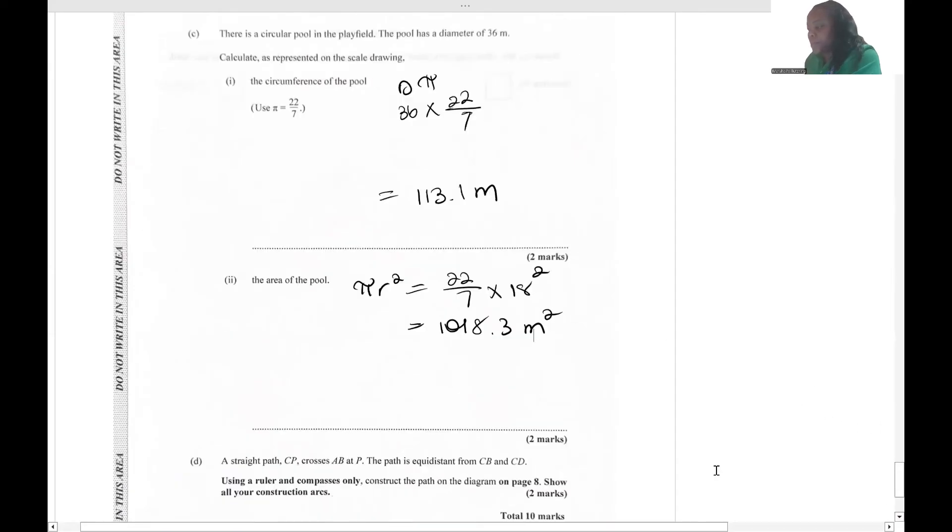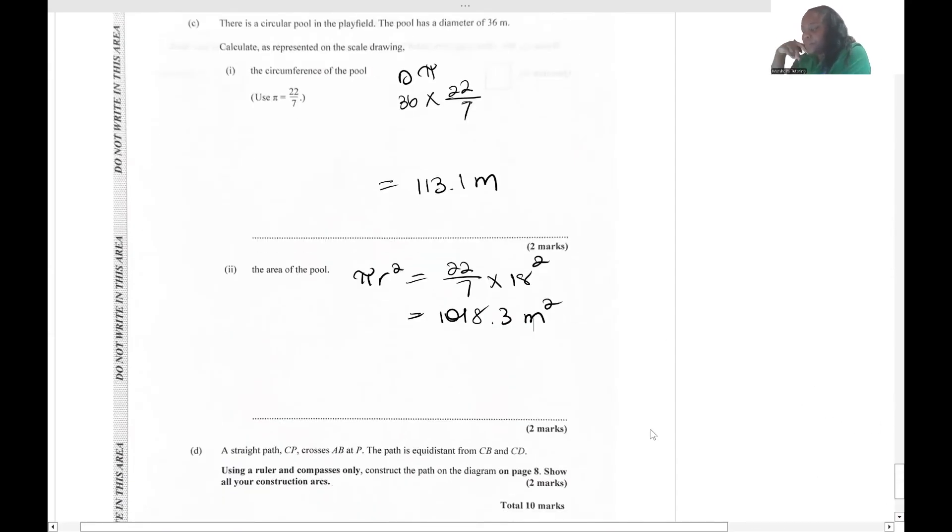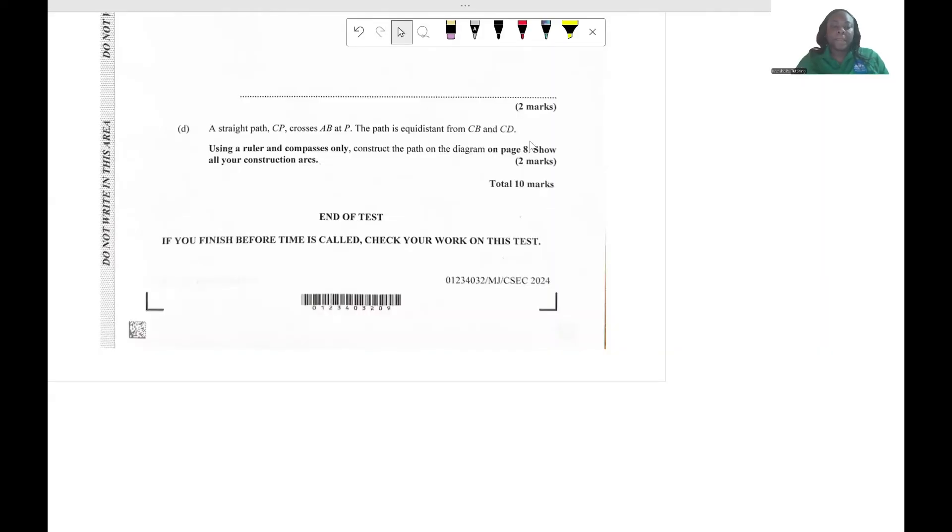The last part of the question: A straight path CP crosses AB at P. The path is equidistant, so equal distance from CB and CD. We're using a ruler or a pair of compasses, so you have to have your geometry set. My battery died, but we're back. We're going to draw that straight path that's equidistant from CB and CD.